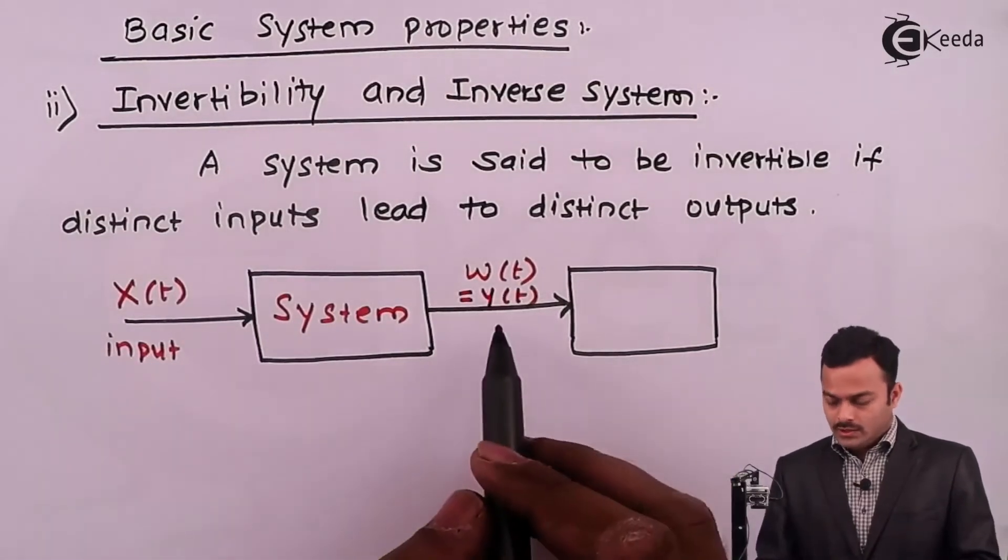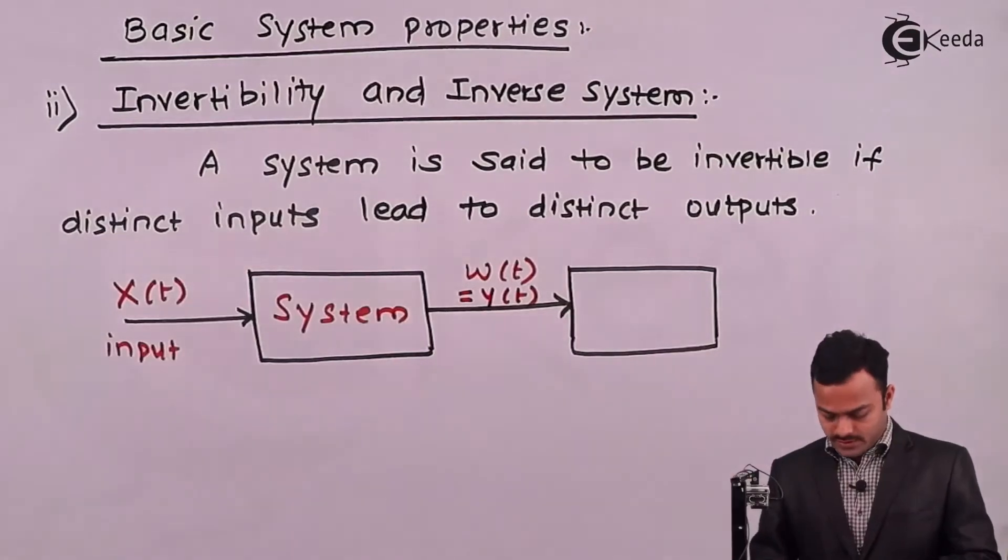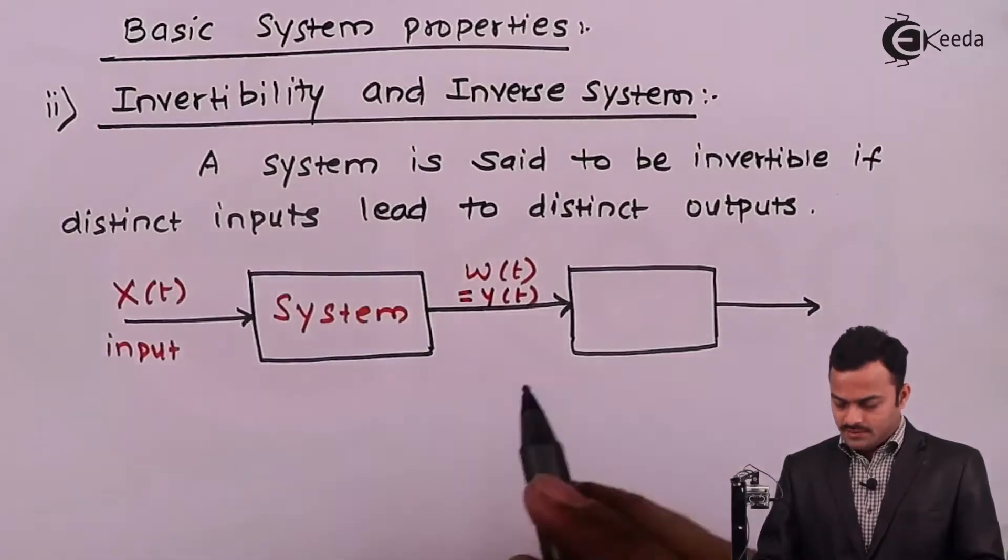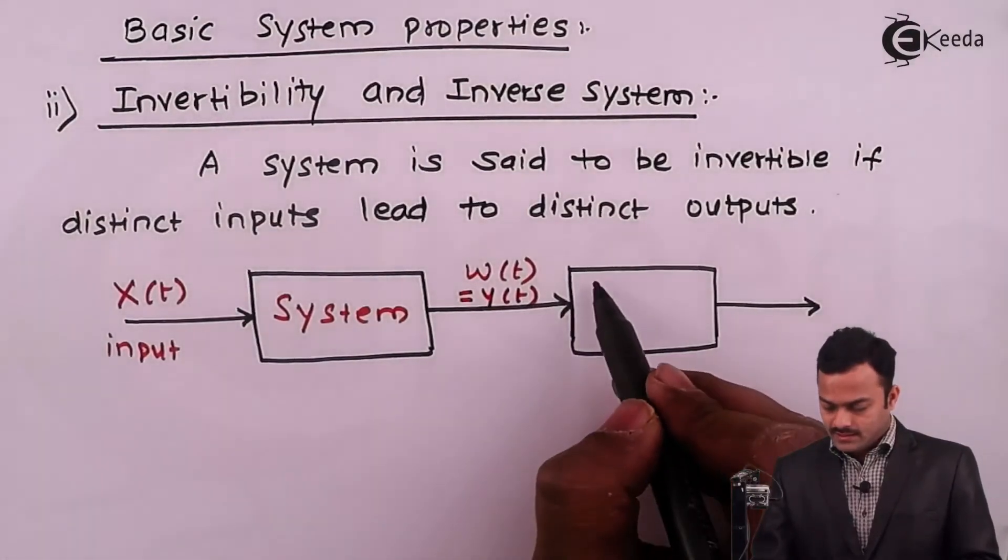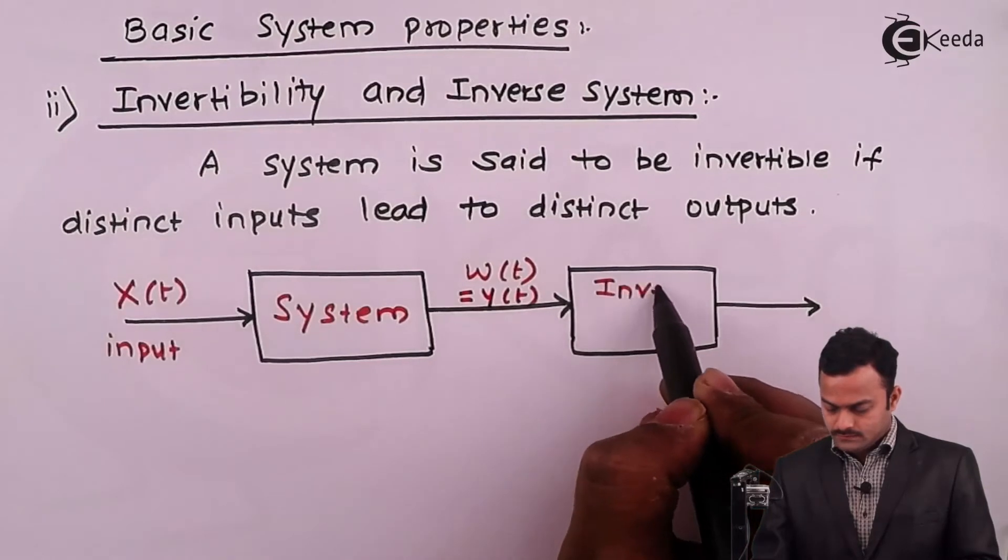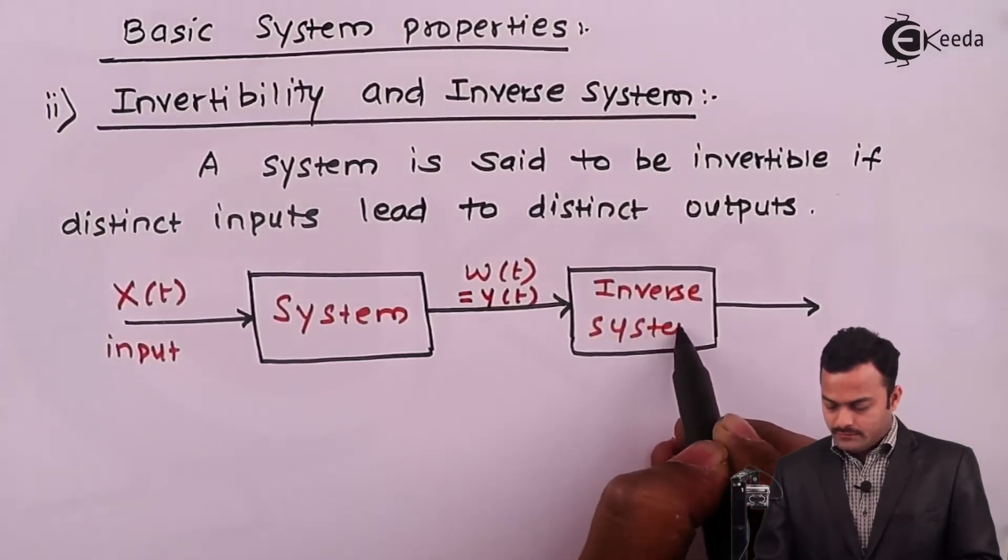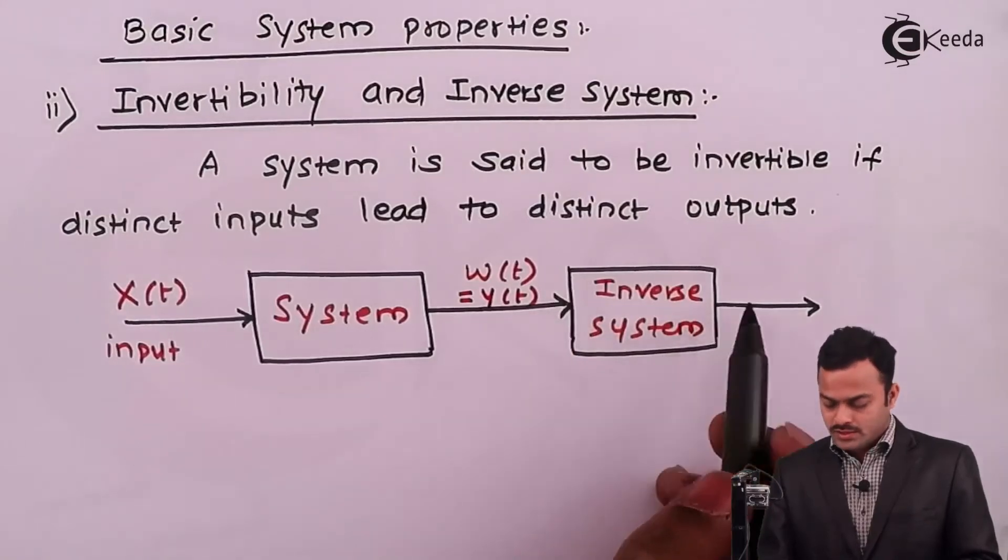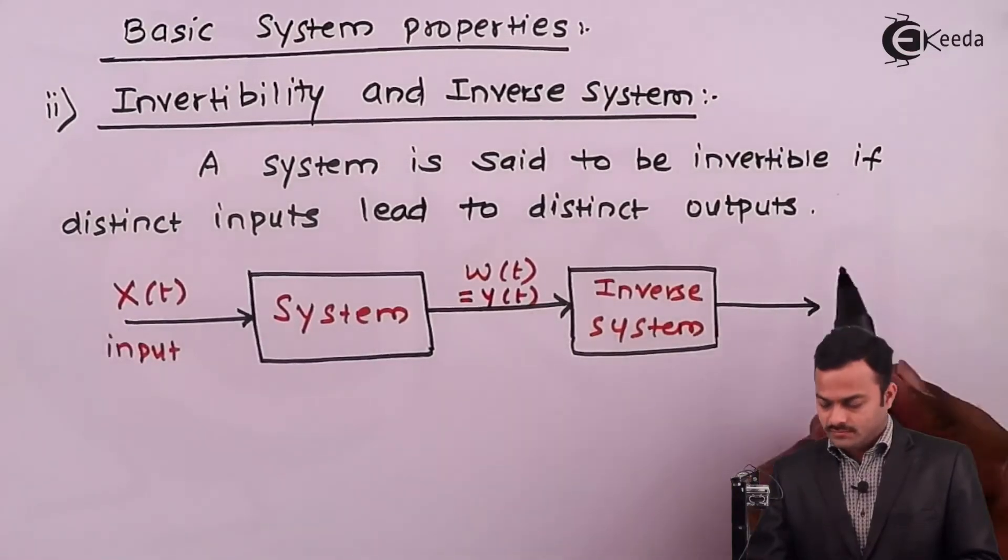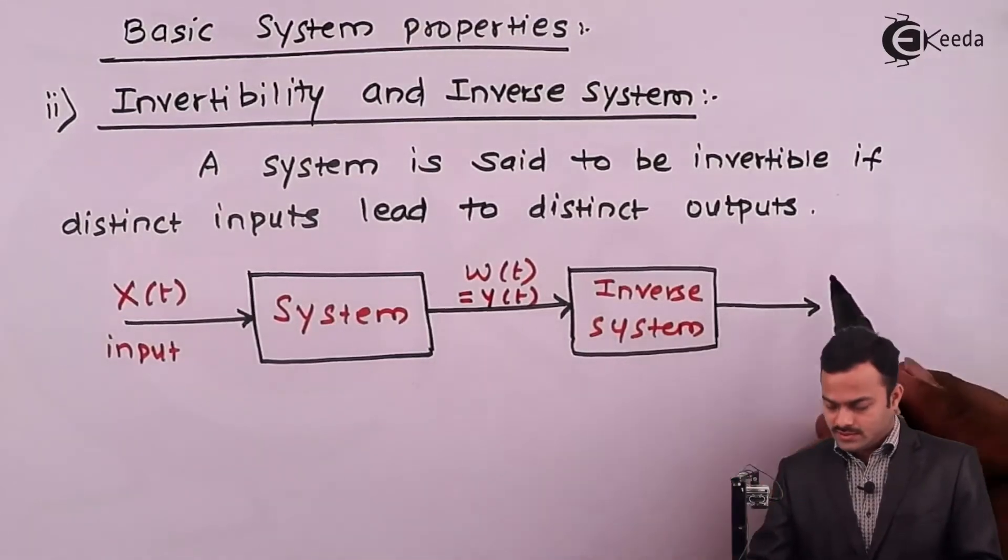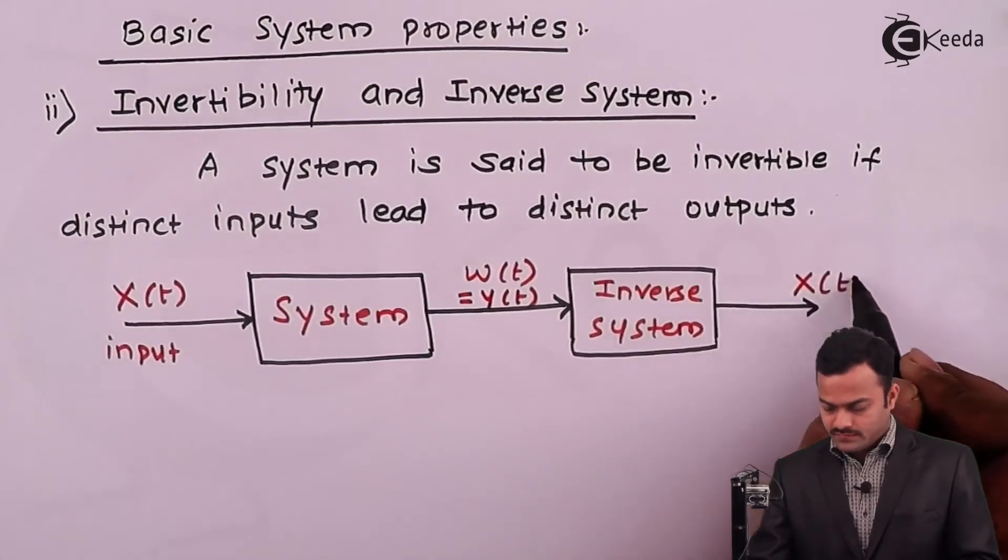Wt, I can say, is output from the system which we can say is yt also. So yt will drive one more system to give another output. This time the system should take care that whatever the input it will give, it should be able to produce the same input as it is. Meaning, after passing y of t through this inverse system, we should be able to get x of t.